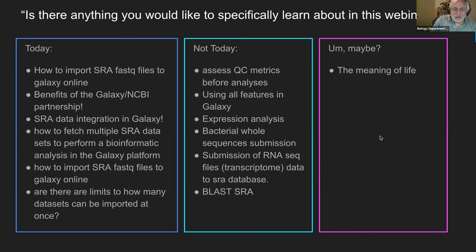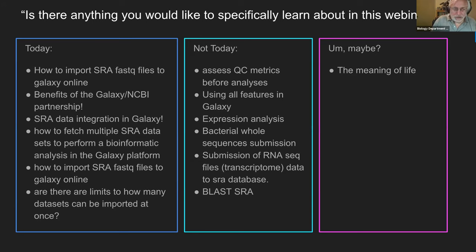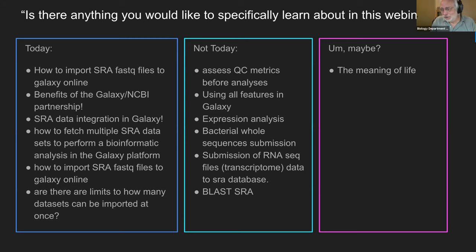When you registered, we asked if there was anything you'd specifically like to learn. We got a whole range of options. We are going to talk about SRA and Galaxy and focus on the parts having to do with their interaction. Everything in the 'today' column we should be covering. Things in the 'not today' column we could cover but don't have time for. One person said 'the meaning of life' — and maybe we'll find that in SRA and Galaxy.